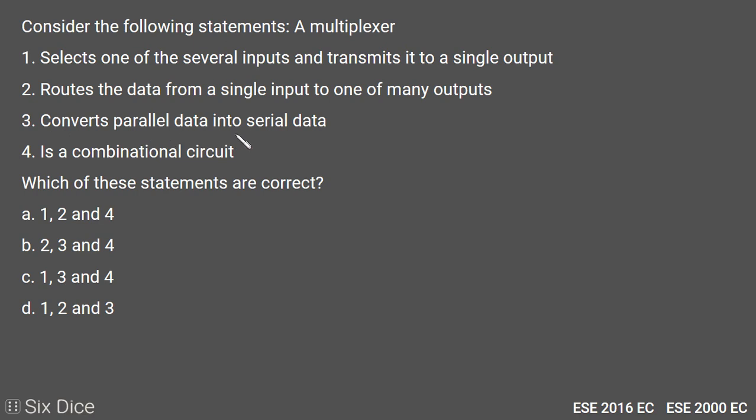Statement 3 - converts parallel data into serial data, and Statement 4 - it is a combinational circuit. Here, if we take an example of a 4-to-1 multiplexer, it converts many inputs to a single output.